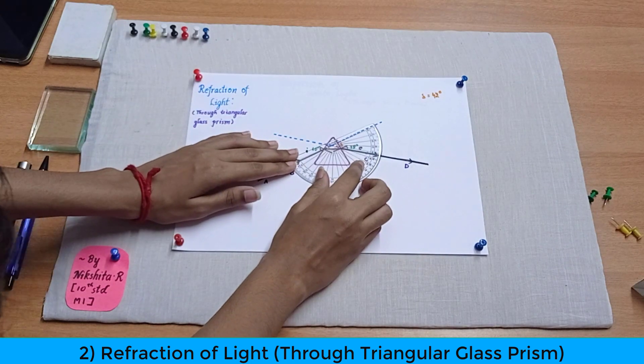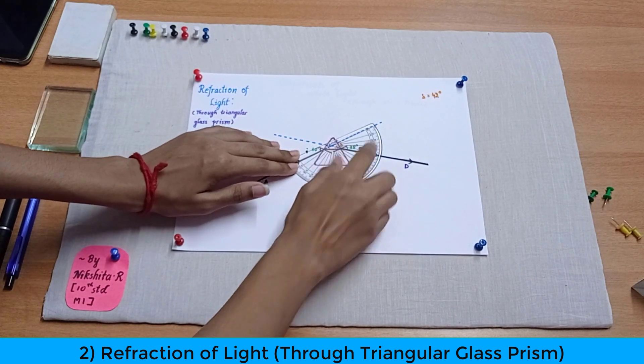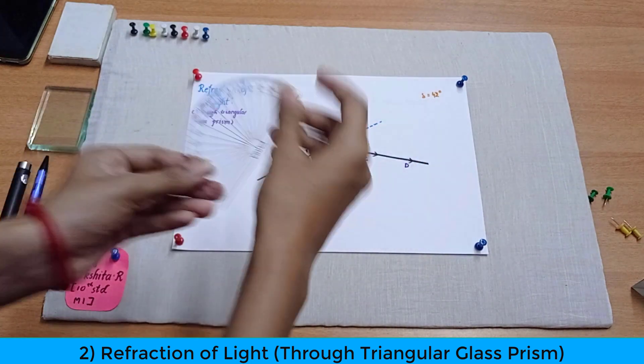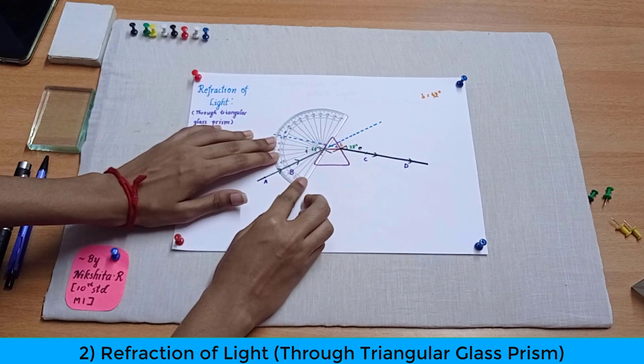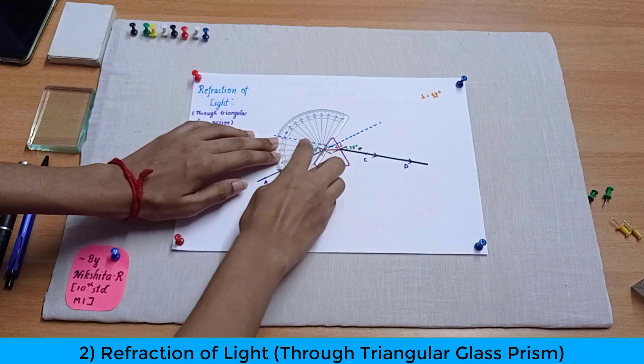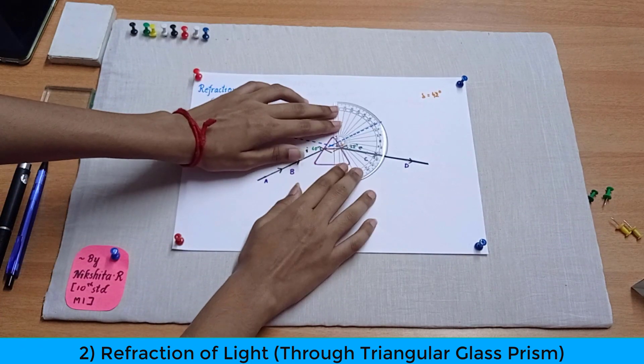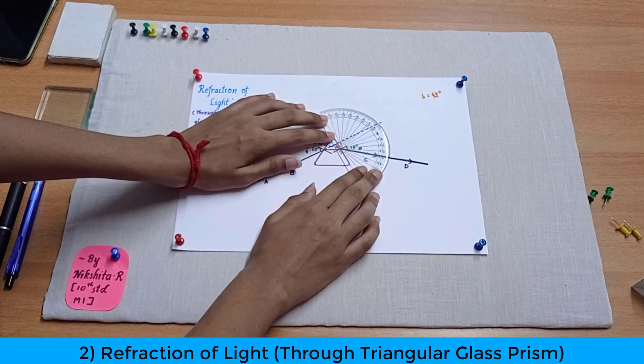Let's measure it with the help of a protractor. So as you can see I have taken a protractor over here and when you calculate it, it's making almost 42 degrees. So now let's measure the incident ray also. As you can see it's also again making a 60 degree with the normal. And the emergent ray is making almost 38 degrees with the normal.